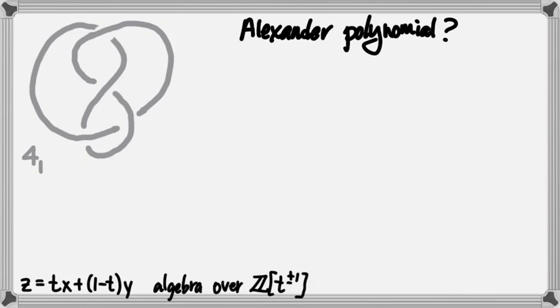So these are polynomials with potentially both positive and negative integer exponents on our variable t, whose coefficients are all integers. That's the module over which we're going to do all of our linear algebra now.